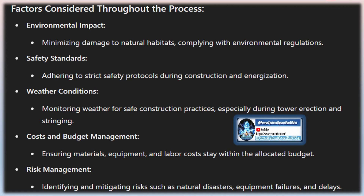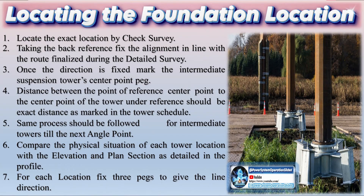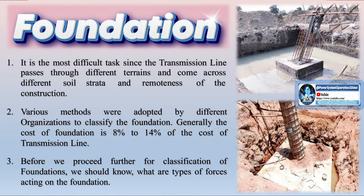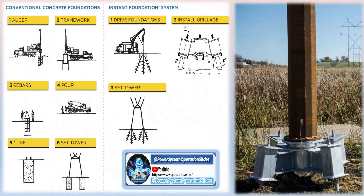Utility companies must obtain permits and clearances from multiple governmental agencies, including environmental impact assessments, land use permits, and safety certifications. This process requires close coordination with regulatory bodies to ensure that all legal obligations are met. In addition to regulatory approval, securing land access or right-of-way is a major task. Negotiating with landowners and local communities is essential, and in some cases utility companies may need to employ eminent domain laws to acquire the land, though this is often a last resort.